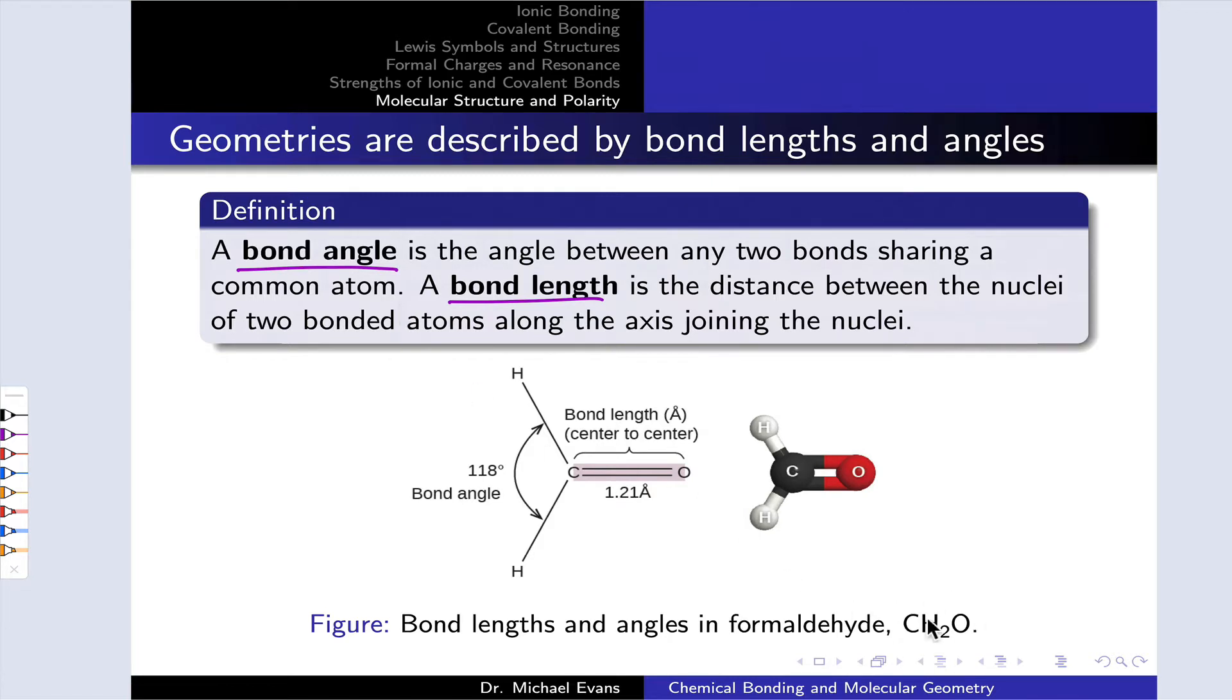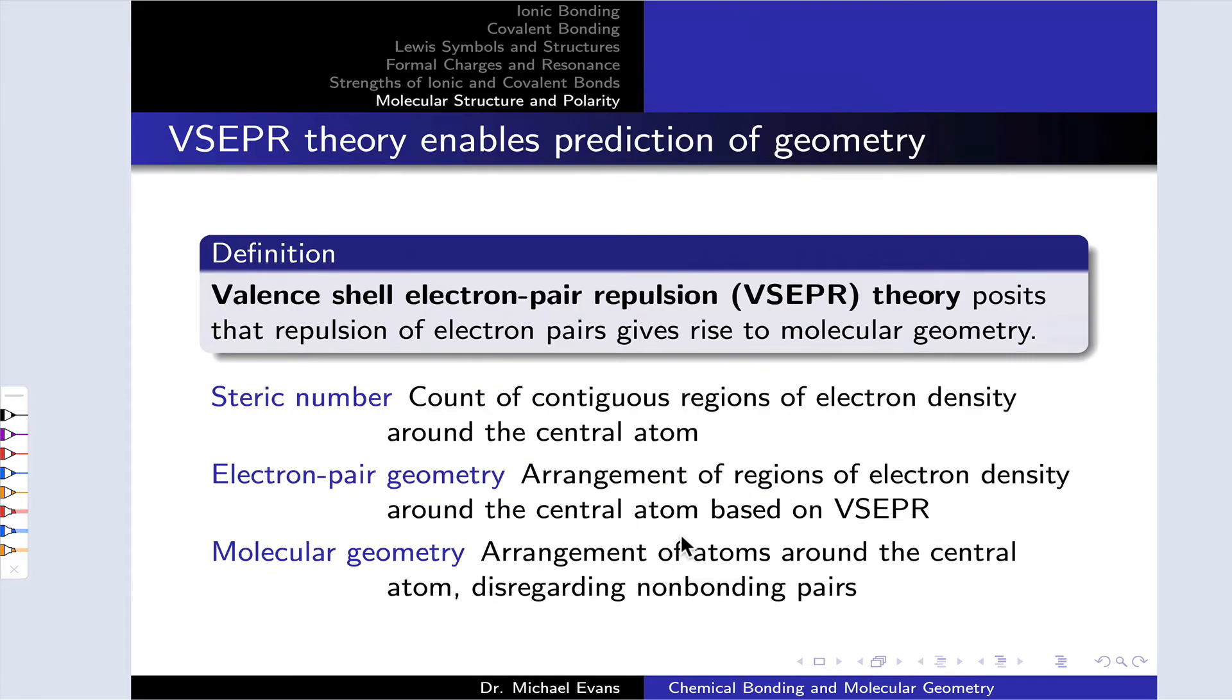Could we start, for example, with CH2O, develop a reasonable Lewis structure for it, and then from that Lewis structure, infer this picture? By the time we get done, you will be able to do this. The conceptual model, the framework, the theory we use to go from a Lewis structure to a geometry is known as VSEPR theory. In full, that's valence shell electron pair repulsion theory.